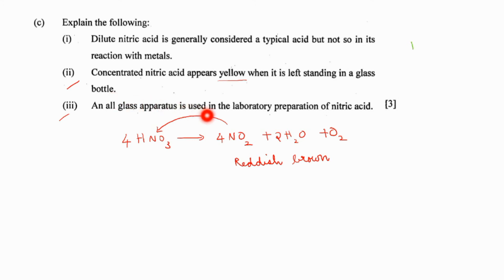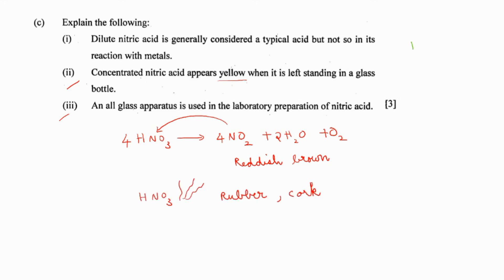All-glass apparatus is used in the laboratory preparation of nitric acid. Nitric acid vapors are highly corrosive, so if you use a rubber stopper or cork stopper, the nitric acid vapors will corrode them. That is the reason the entire apparatus is made of glass, known as a glass retort.